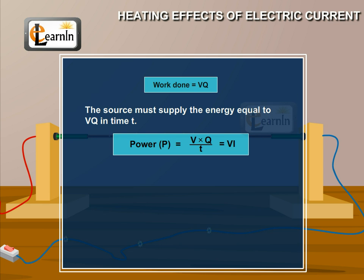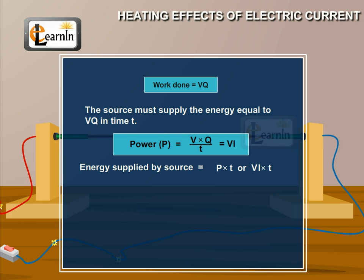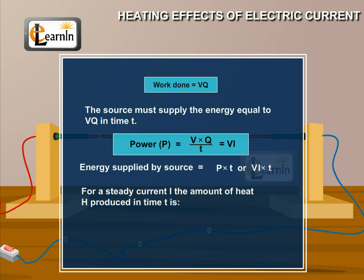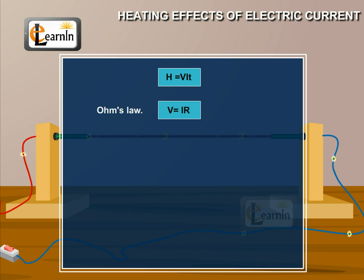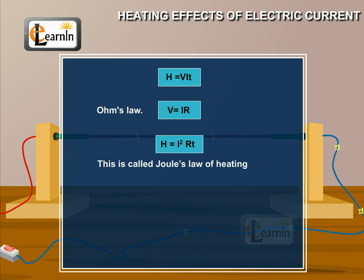The energy supplied to the circuit by the source in time t is P × t, or V·I·t. This energy expended by the source gets dissipated in the resistor as heat. Thus, for a steady current I, the amount of heat H produced in time t is H = VIt. Applying Ohm's law, i.e., V = IR, to this equation, we get H = I²Rt.